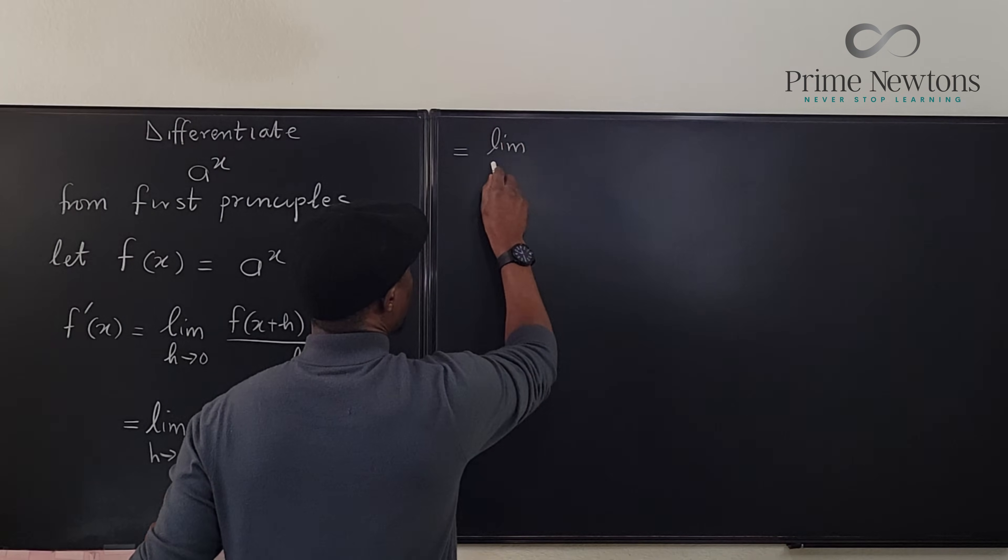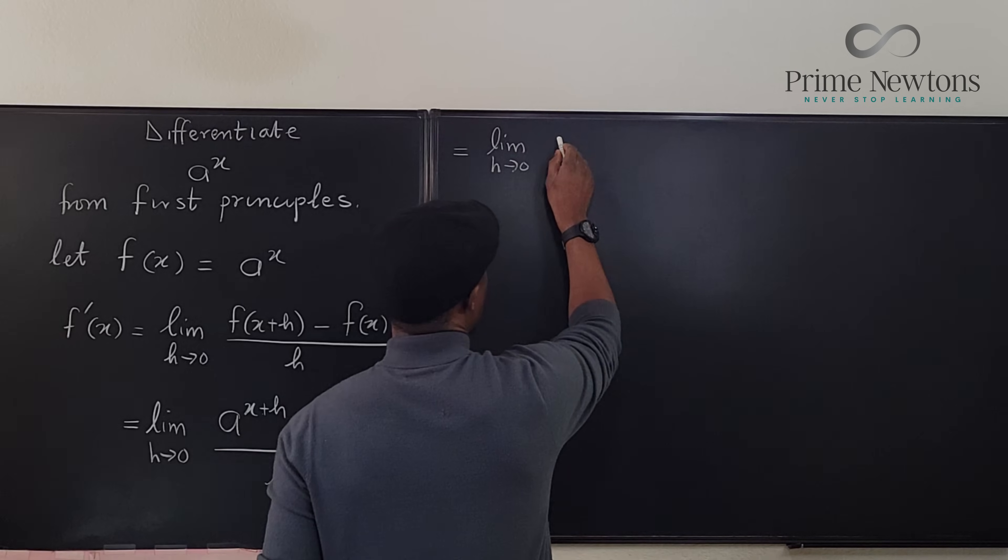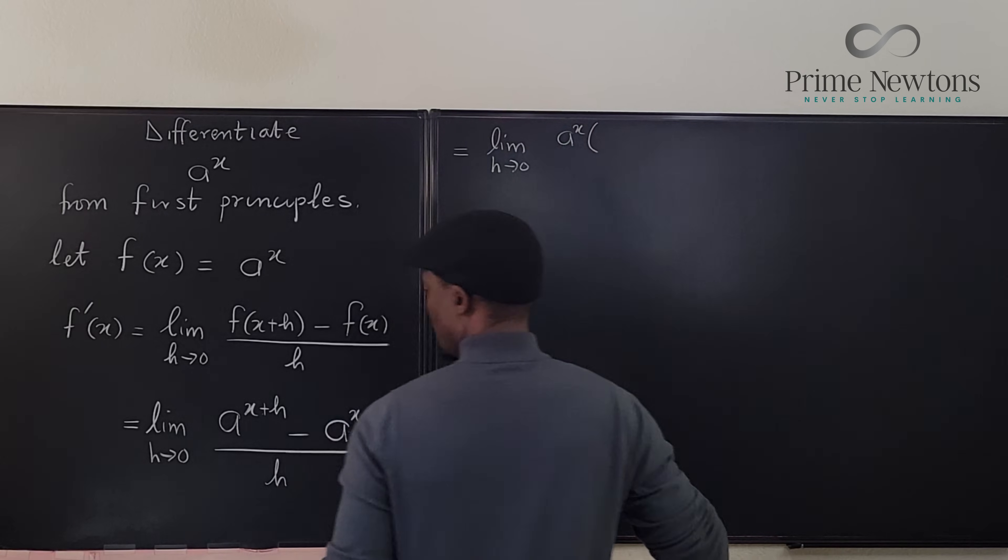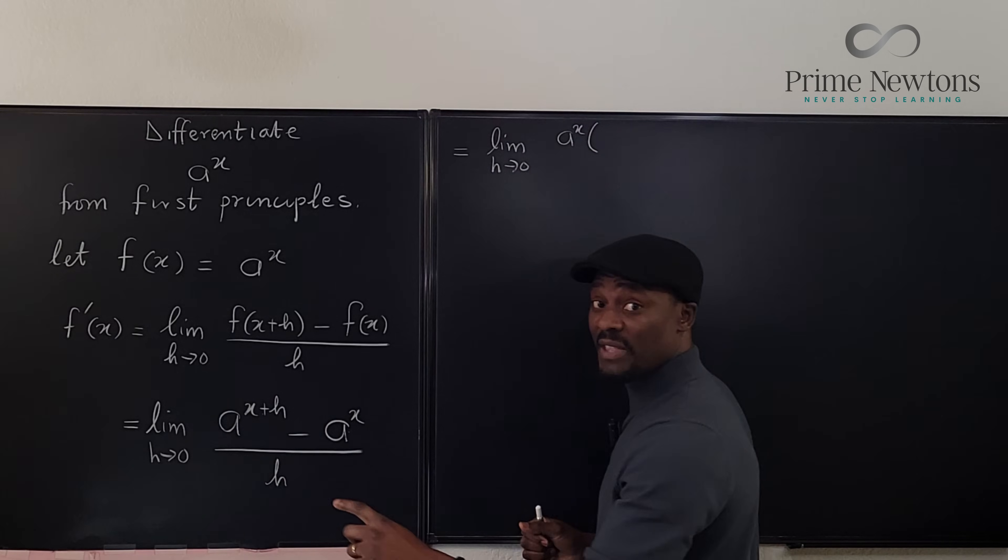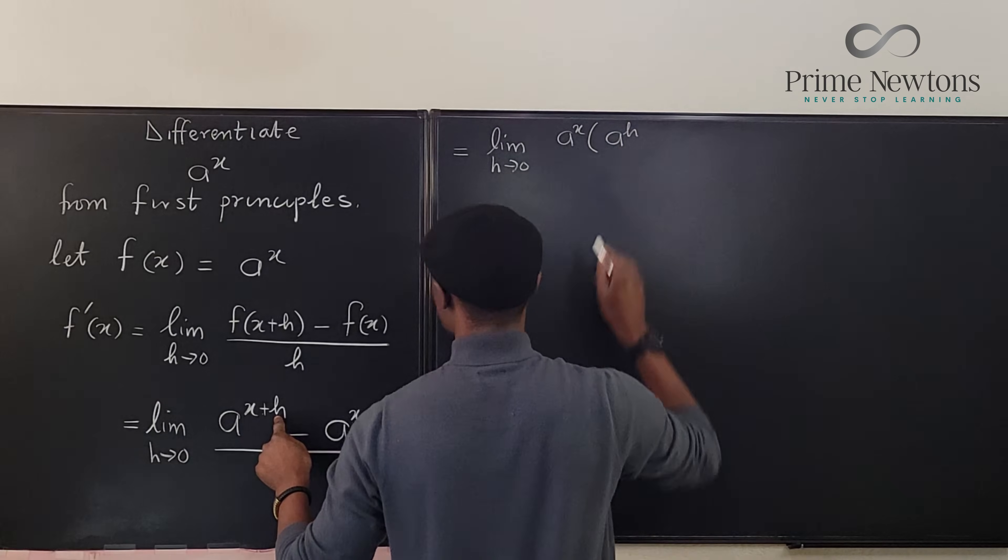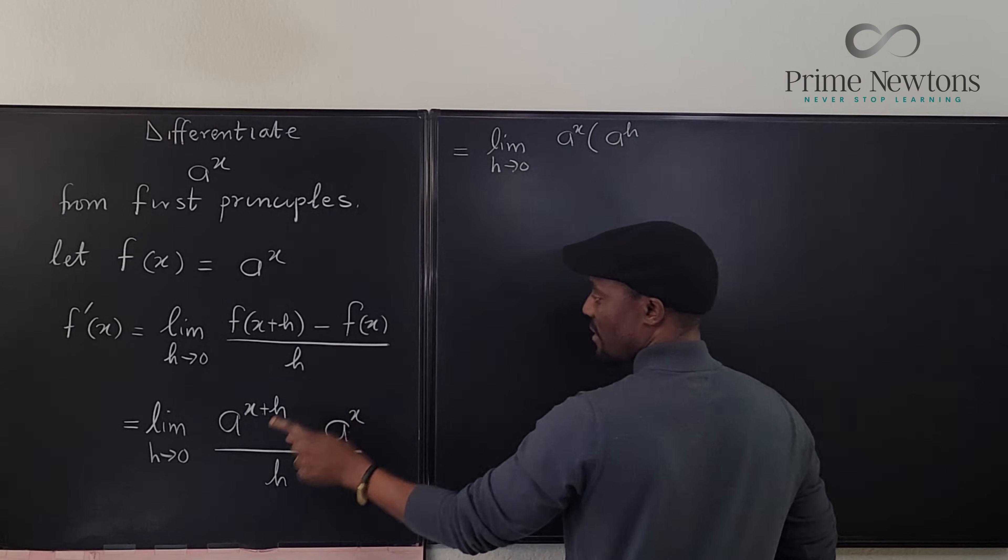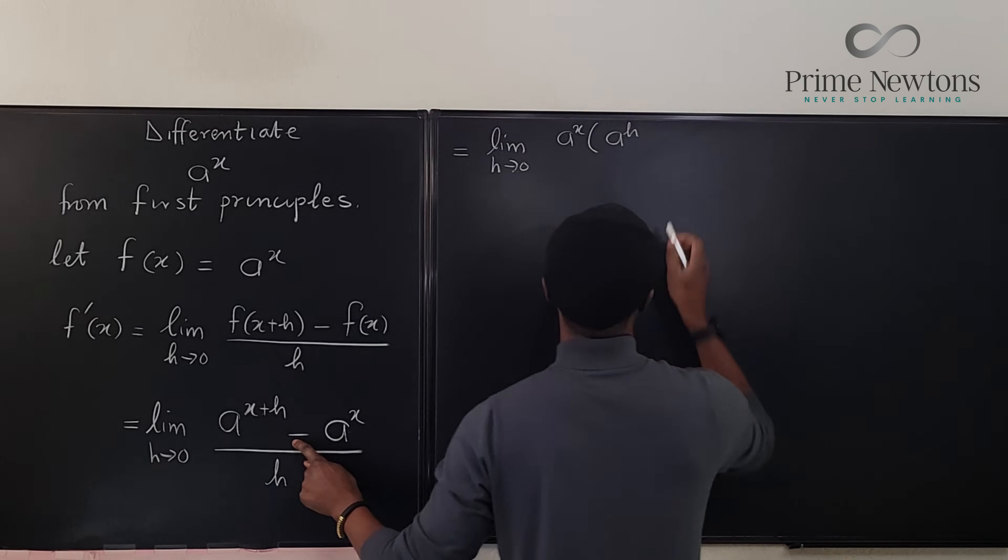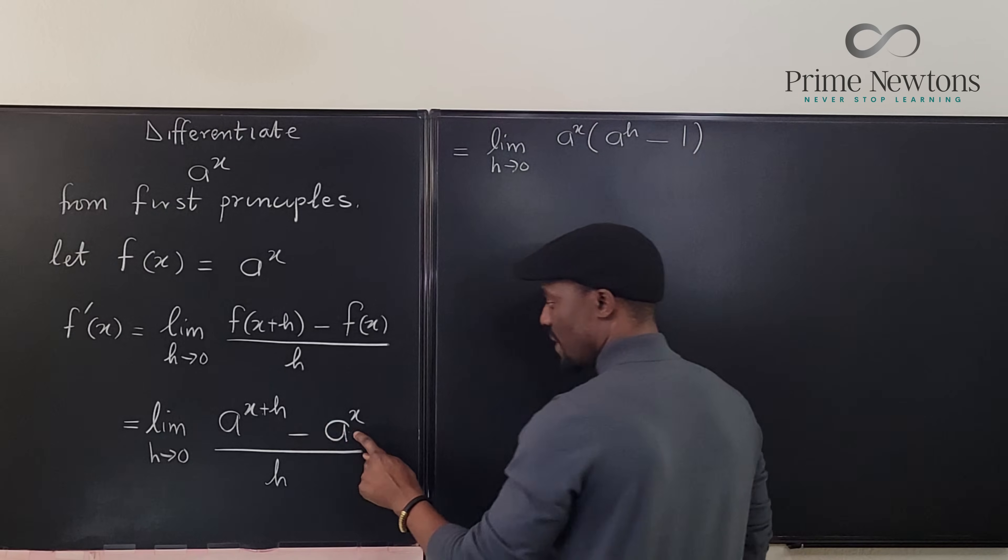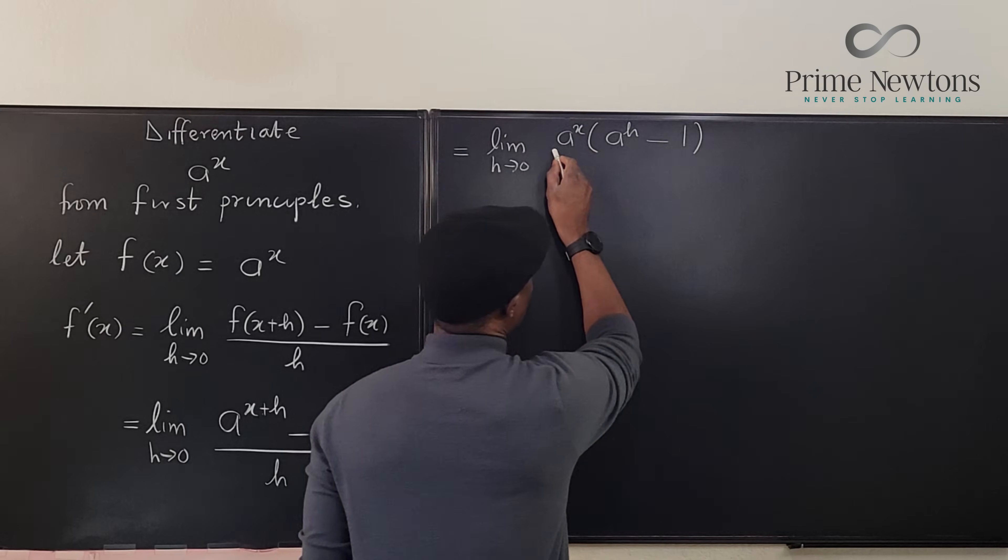the limit as h goes to zero of, if I factor a to the x I'm going to end up with a to the x. So remember factoring is the same thing as dividing, so if you factor this out you have divided this by a to the x, you have the h left so you're going to have a to the h minus one because we've divided this by a to the x and the bottom is still there divided by h.